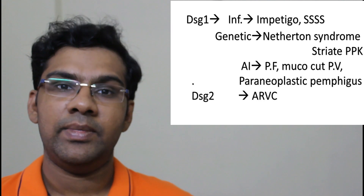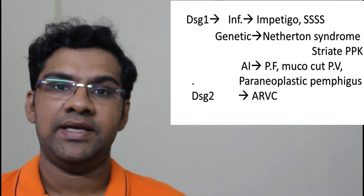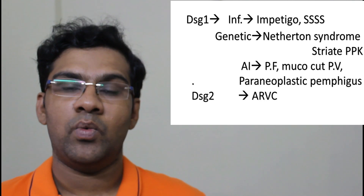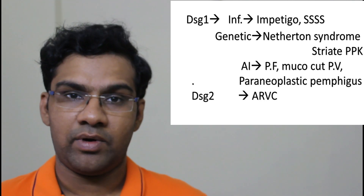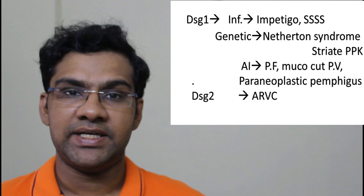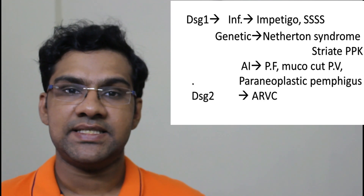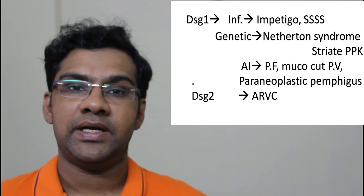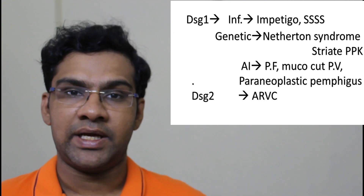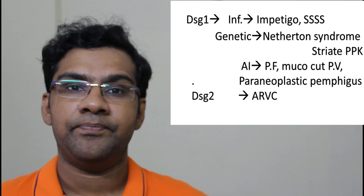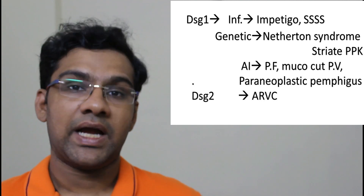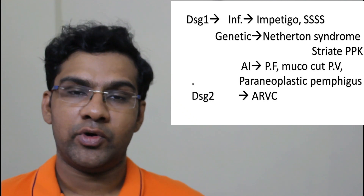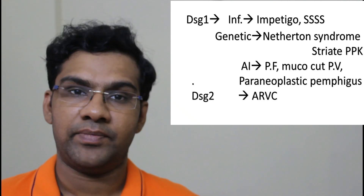Mutations in the genes producing desmoglein 1 can lead to two conditions: Netherton syndrome and striate palmoplantar keratoderma. Netherton syndrome contains three major components: ichthyosiform dermatosis imitating ichthyosis linearis circumflexa, hair abnormalities such as trichorrhexis invaginata, and atopic diathesis. Coming to autoimmune conditions, pemphigus foliaceus and mucocutaneous pemphigus vulgaris are the conditions which target desmoglein 1.